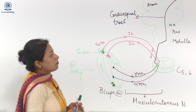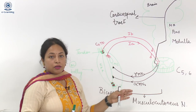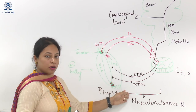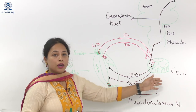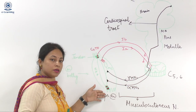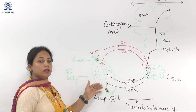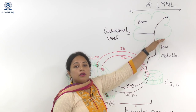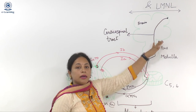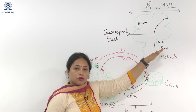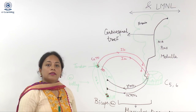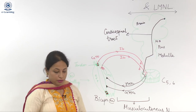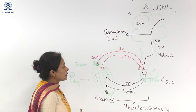Now, what happens when there is a lesion? The lesion can be in the peripheral nerve coming out from the spinal cord to the skeletal muscle, or it can be in the 2nd or 3rd order neurons — which we call an upper motor neuron lesion. In both cases, the clinical representation will be entirely different.